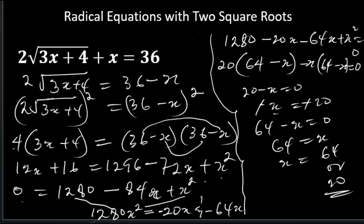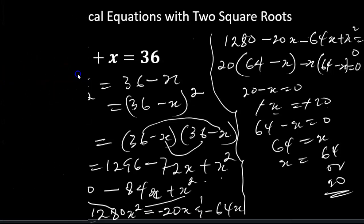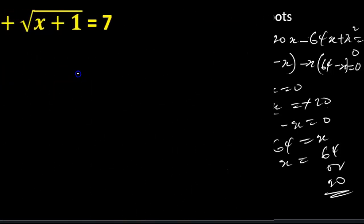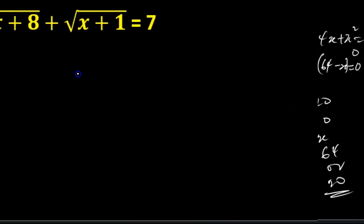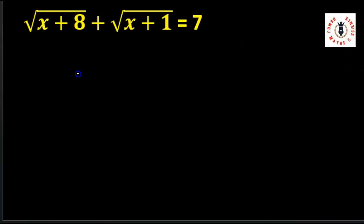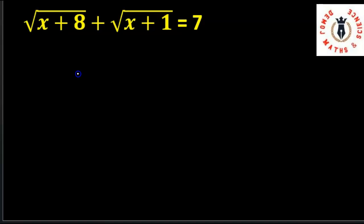Now let's take a look at the second equation. I'd like you to pause this video and try the second equation on your own. Okay, let's do it together. We have the root of x plus 8 plus the root of x plus 1 equals 7. We observe that we have two radical numbers on one side and one rational number on the other side.